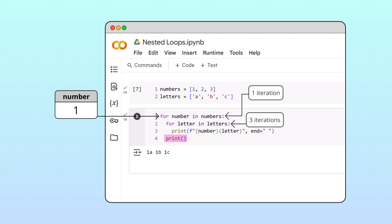The second iteration of the outer loop works just the same as the first, except now the number variable is assigned the value 2. This means that when Python executes the inner loop, every grid entry that is printed will start with a 2.